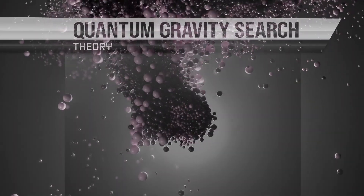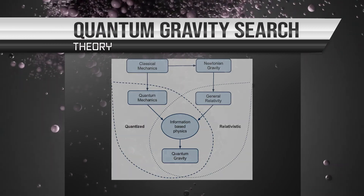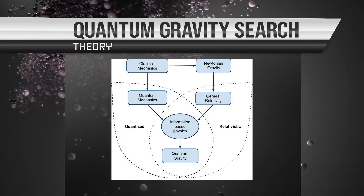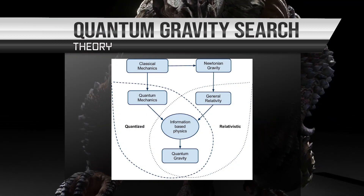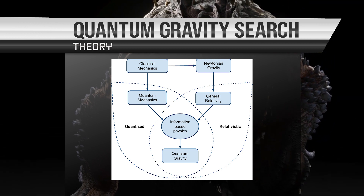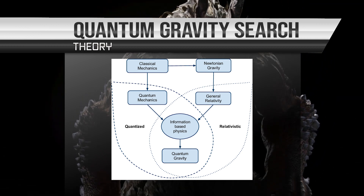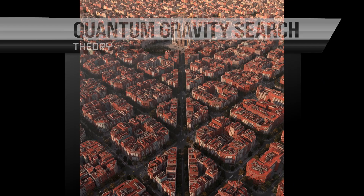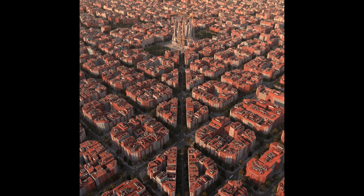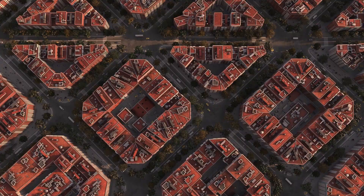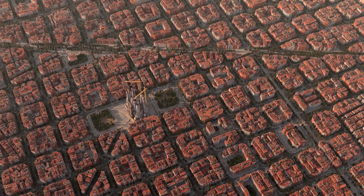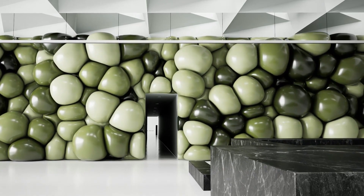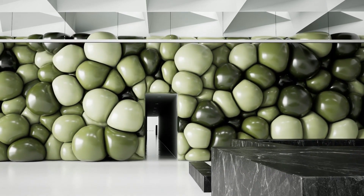The search for a theory of quantum gravity is one of the most active areas of research in quantum physics. This is because the current theories of quantum mechanics and gravity are incompatible, and finding a way to reconcile them would be a major breakthrough in our understanding of the universe.